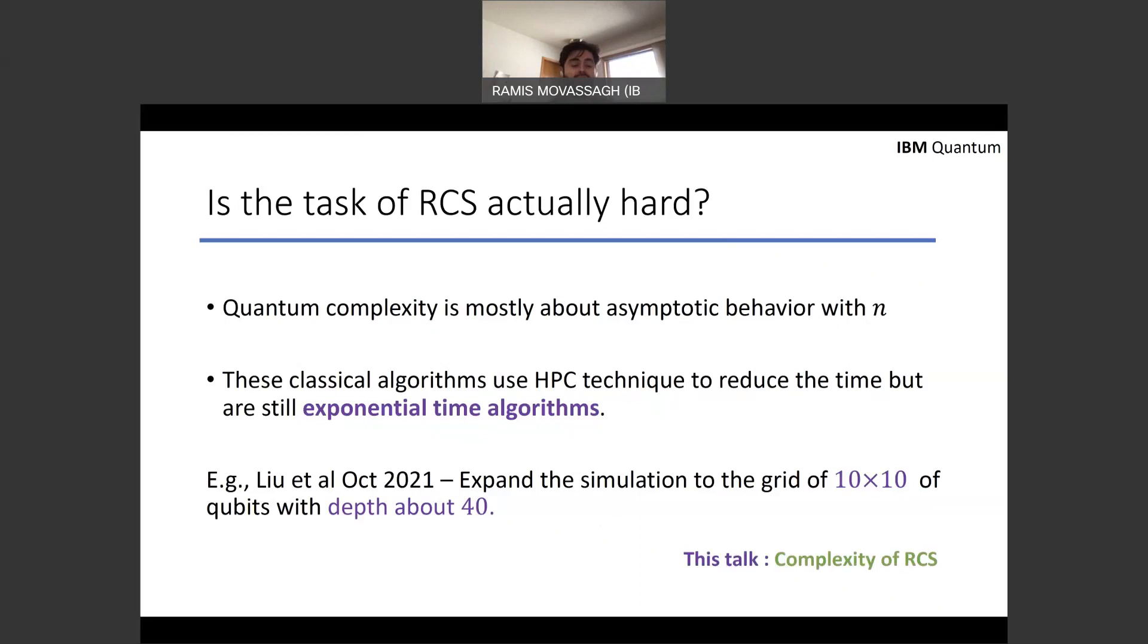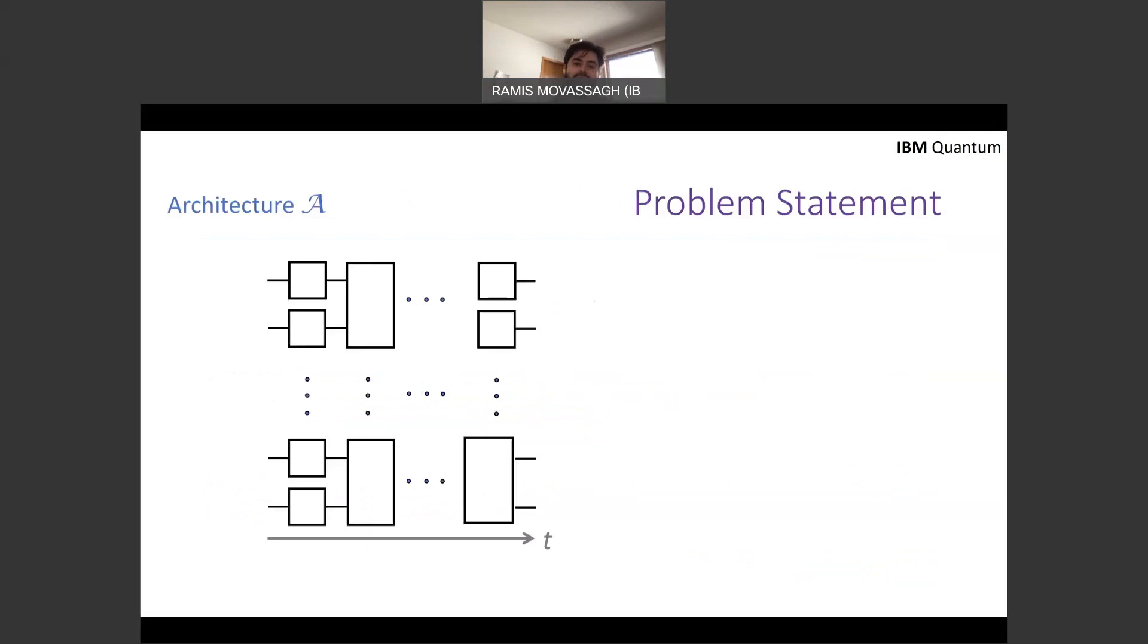So today I'll talk about the complexity of random circuit sampling to try to justify or perhaps challenge whether the task is actually hard theoretically. Is there a point to doing such experiments to eventually overturn the extended Church-Turing thesis?